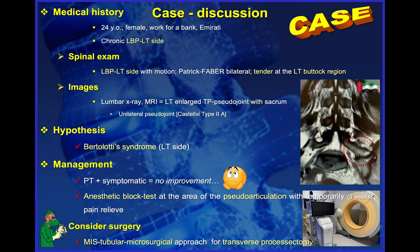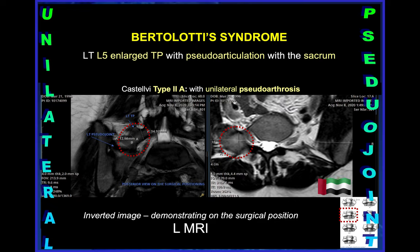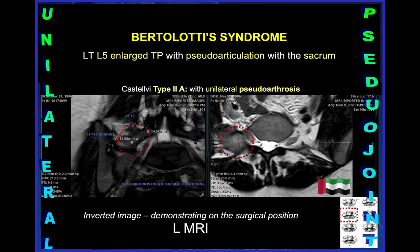The technique we are currently using is as follows. This is one example of a young lady with typical Bertolotti's syndrome who had a temporary response to the injection test, and we proceeded with MIS tubular macrosurgical transverse processectomy. It is very important to analyze the available images in different views — including X-ray, MRI, and CT scan — to measure and calculate where you are going to cut the joint, because the joint can be very large, very deep, and close to important structures such as the L5 nerve root.